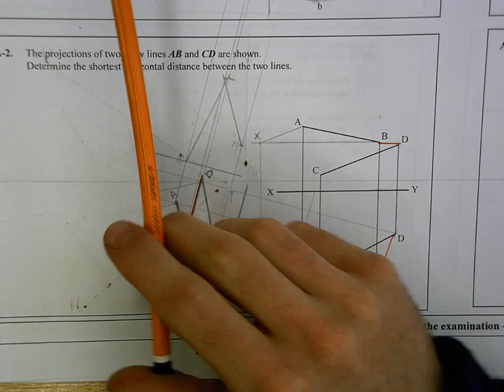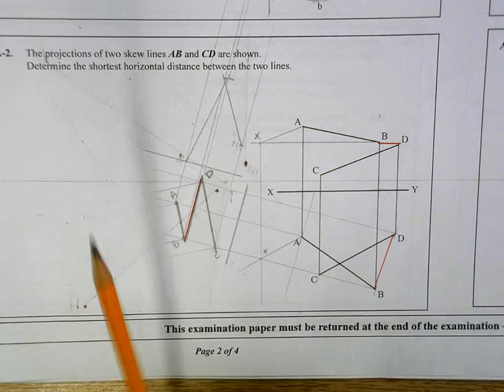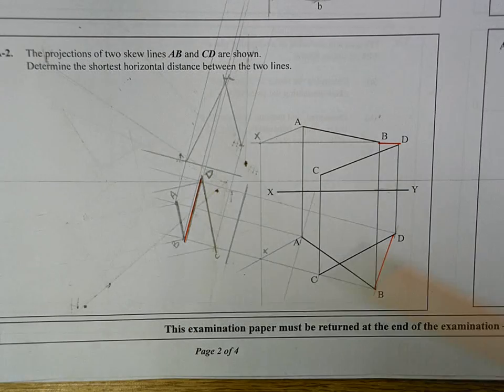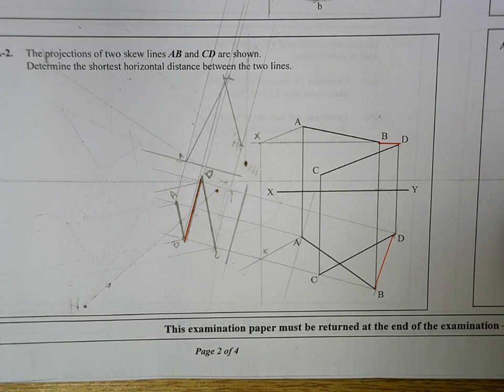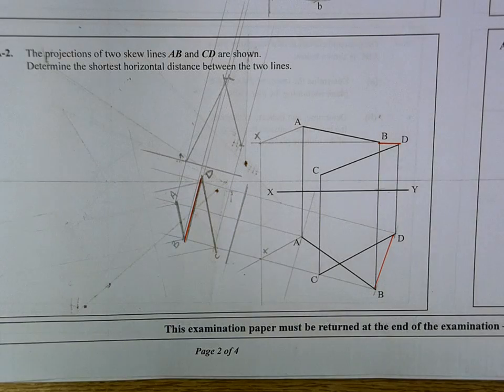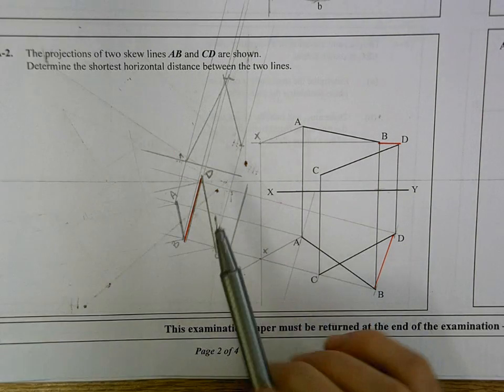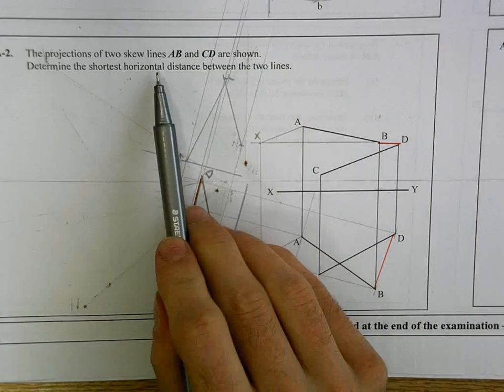Here we're given two skew lines, AB and CD. We had a question like this yesterday where they asked for the shortest possible distance between them. This time it's slightly different—they're asking for a shortest distance, but they stipulate it has to be horizontal.